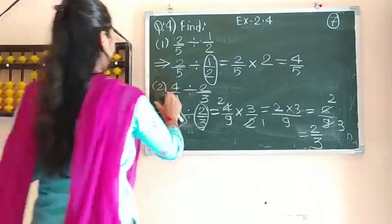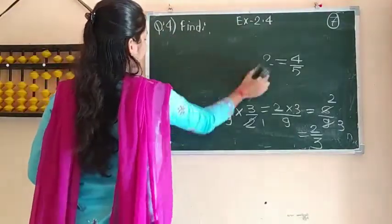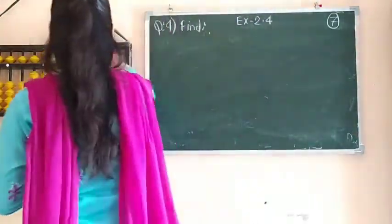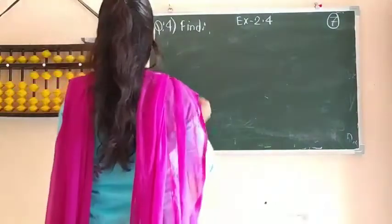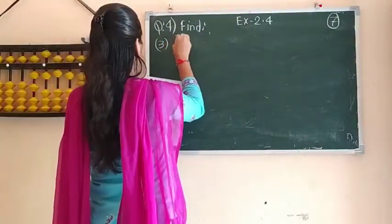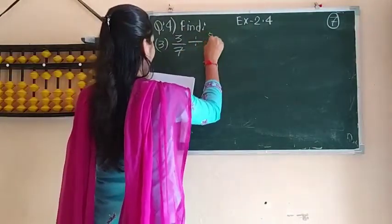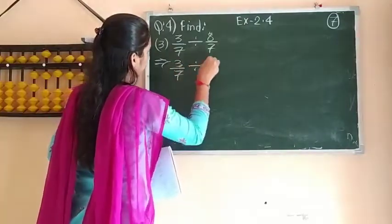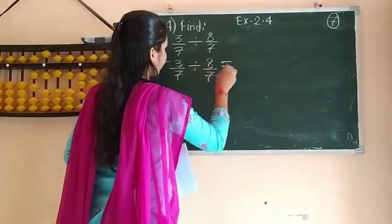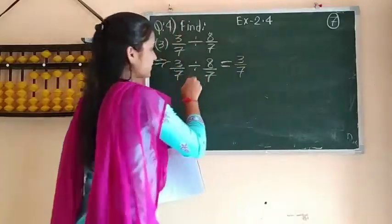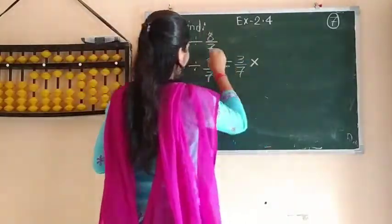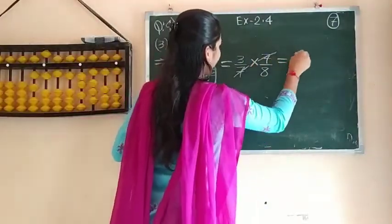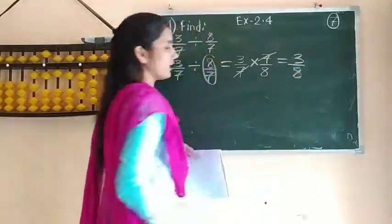Next: 3 upon 7 divided by 8 upon 7. Write it as it is — 3 upon 7 — then replace the division sign with multiplication and make the reciprocal of 8 upon 7, which is 7 upon 8. The 7s cancel, so the answer is 3 upon 8.